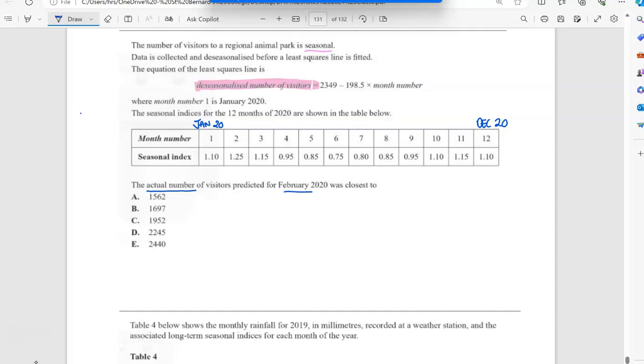The question is the actual number of visitors for February. So what you have to look at is actual. If we wrote down, remember we said actual is the re-seasonalized formula.